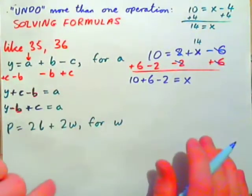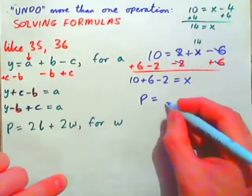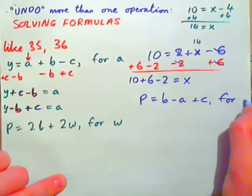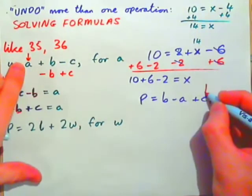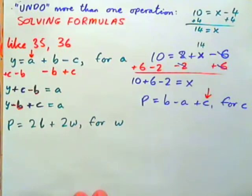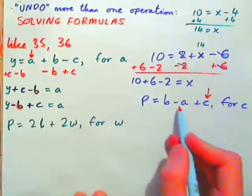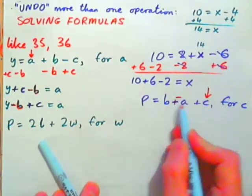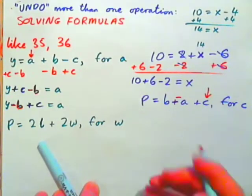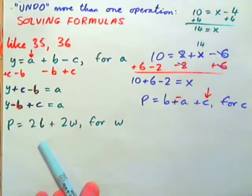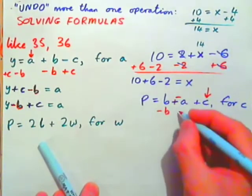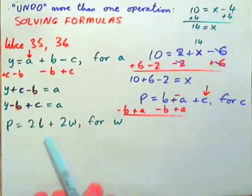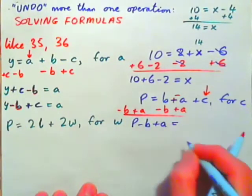For fun, solve P equals B minus A plus C for C. We need to get C by itself. We could change the subtraction sign to plus negative, so we have B plus negative A plus C. To undo adding B, subtract B. To undo adding negative A, add positive A — subtract B and add A to both sides. We get P minus B plus A equals C.